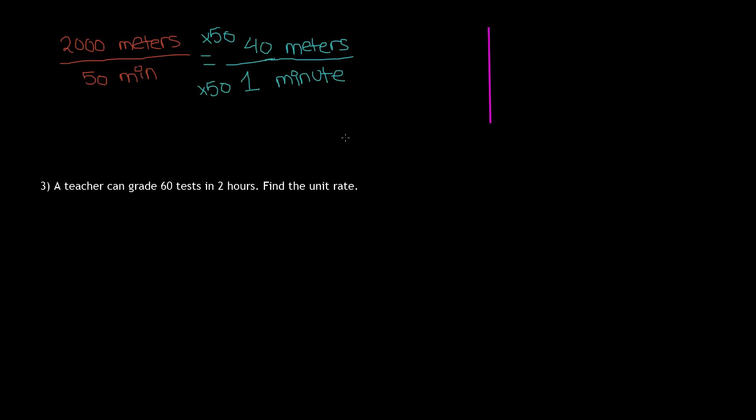And our last example says, a teacher can grade 60 tests in 2 hours. Find the unit rate. Once again, same thing. So first, we know that a rate is a ratio, so it can be written as a fraction. So 60 over 2. And we have to include our units. So 60 tests and 2 hours. So our quantities are 60 and 2, and our units are tests and hours. And this must be equal to, if you want to find the unit rate, a denominator of 1. So we know that 1 times 2 is 2.